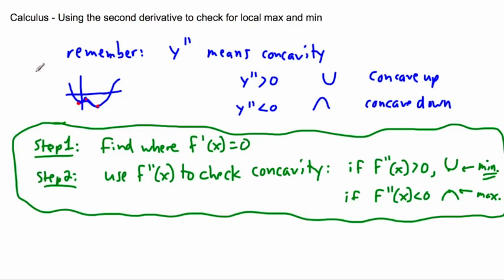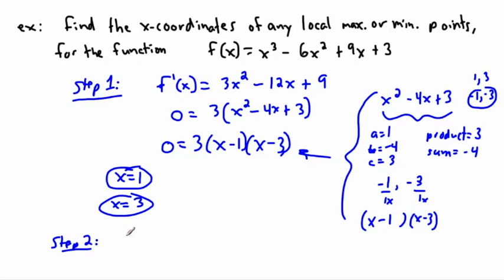Now step two: use f double-prime to check concavity. I need the second derivative. My first derivative was 3x² − 12x + 9, so I take its derivative now. The second derivative is the derivative of the derivative. That gives f double-prime of x = 6x − 12.